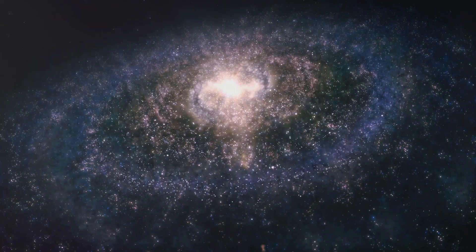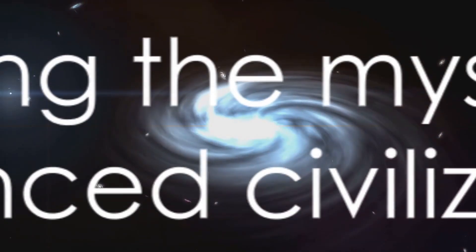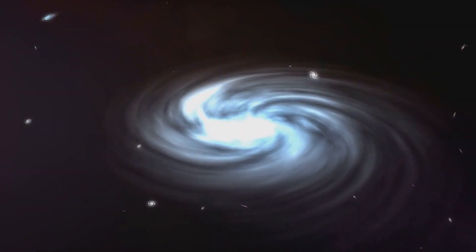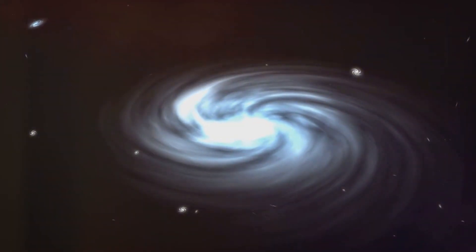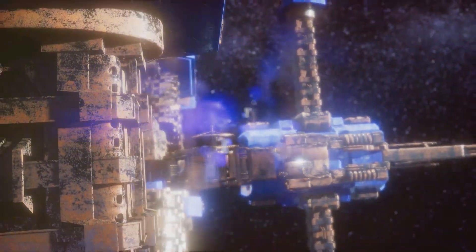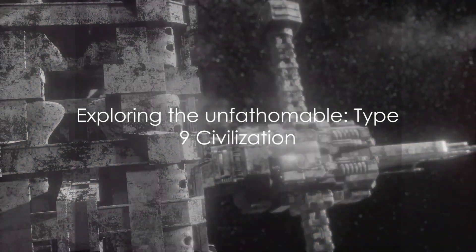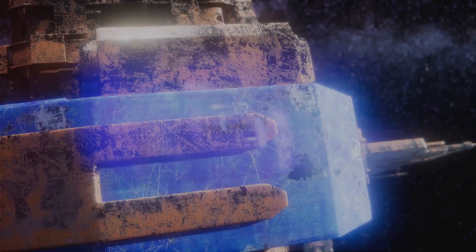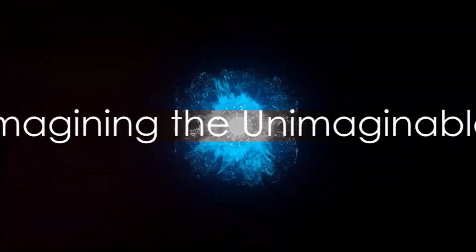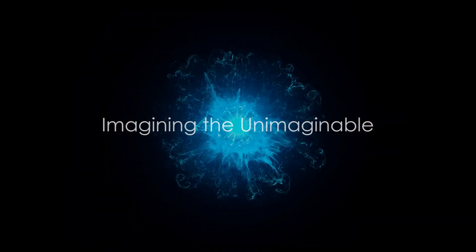But what if we dared to venture beyond these three types? What if there were civilizations so advanced, so incredibly powerful, that they could control energy on an even larger scale, beyond the confines of a single galaxy? This brings us to the concept of a Type 9 civilization, a level of advancement that is almost impossible to fathom. So, what might a Type 9 civilization look like?